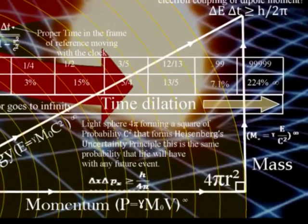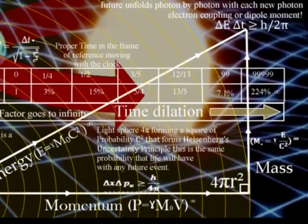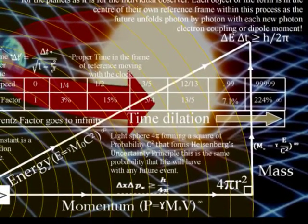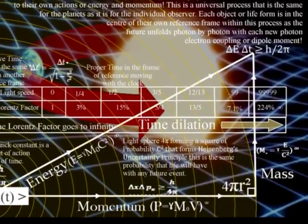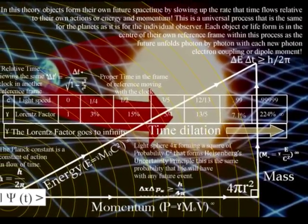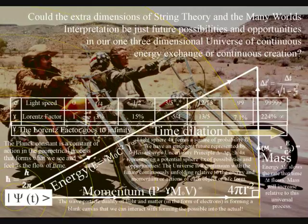Everything from the smallest creature to the largest planet forms its own future spacetime by slowing up the rate that time flows. In such a theory, the parallel universes of string theory are just future possibilities and opportunities in our one three-dimensional universe of continuous energy exchange, continuous creation.